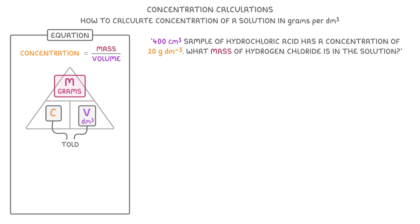If we look at our formula triangle, we can see that mass, which is on the top, must be concentration times volume. So we just turn our 400 centimetres cubed into decimetres cubed by dividing it by 1000, and multiply this 0.4 decimetres cubed by 20, to give us a mass of 8 grams. So there must have been 8 grams in our original sample of 400 centimetres cubed.